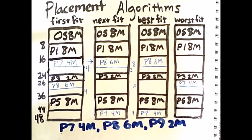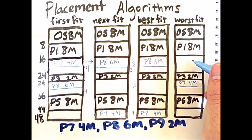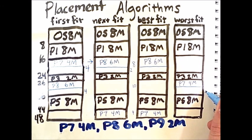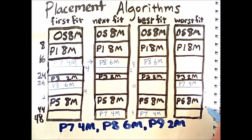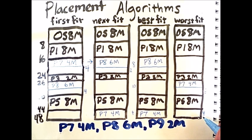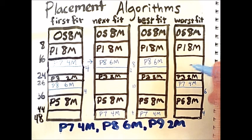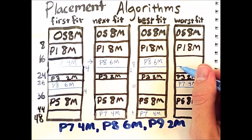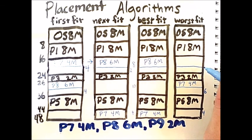Worst fit will also place process 8 here, because its other options are this 6 megabyte space and this 4 megabyte space. This space does not fit the process, and this space fits it too well. This slot right here is the worst fit available for process 8.